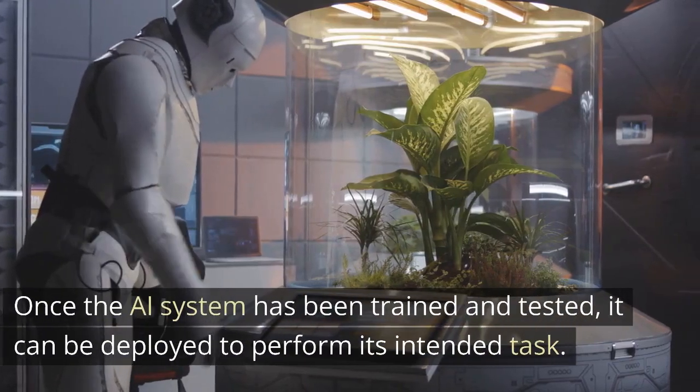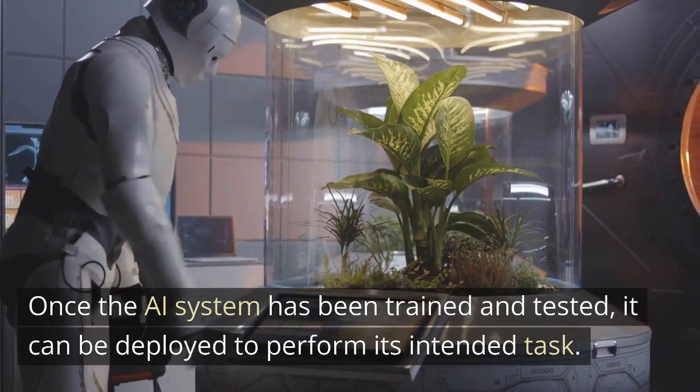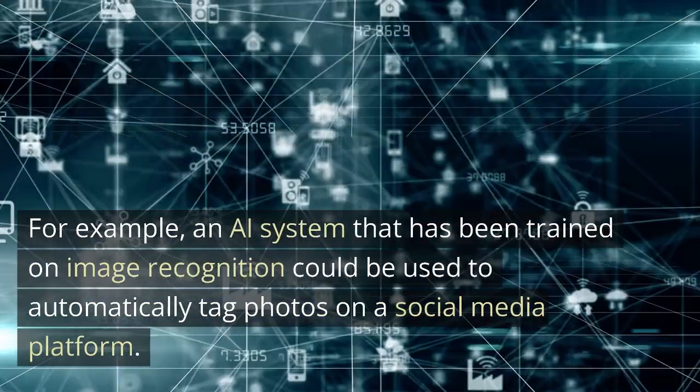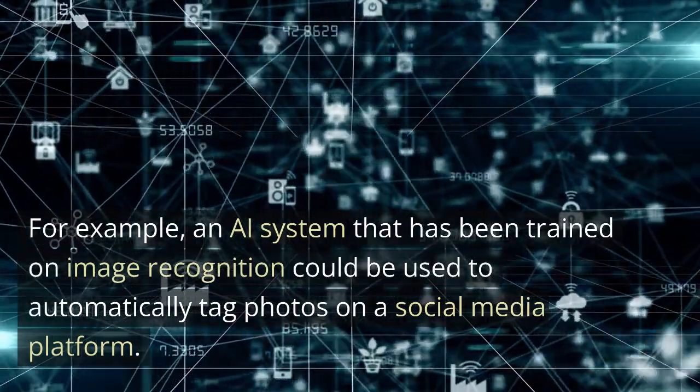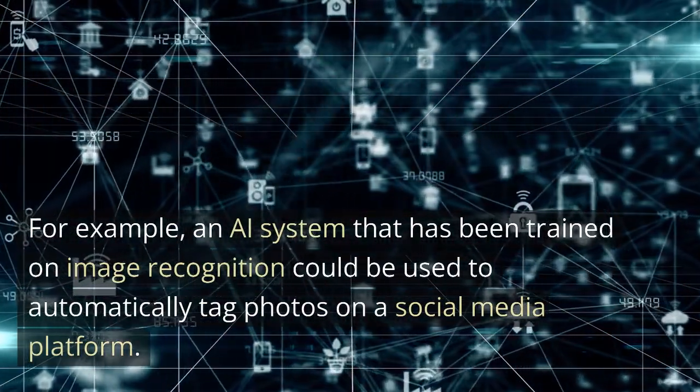Deployment. Once the AI system has been trained and tested, it can be deployed to perform its intended task. For example, an AI system that has been trained on image recognition could be used to automatically tag photos on a social media platform.